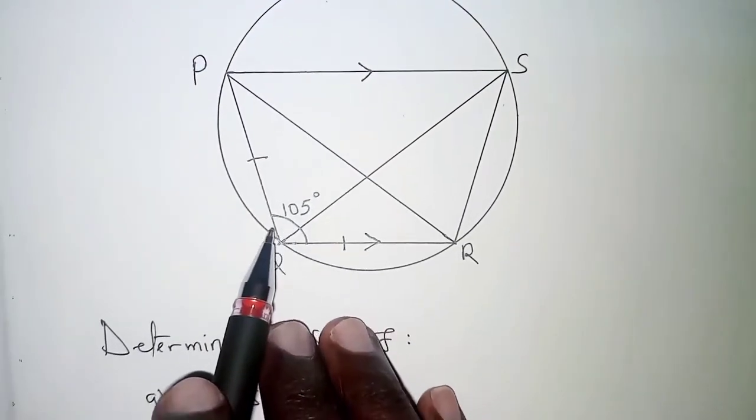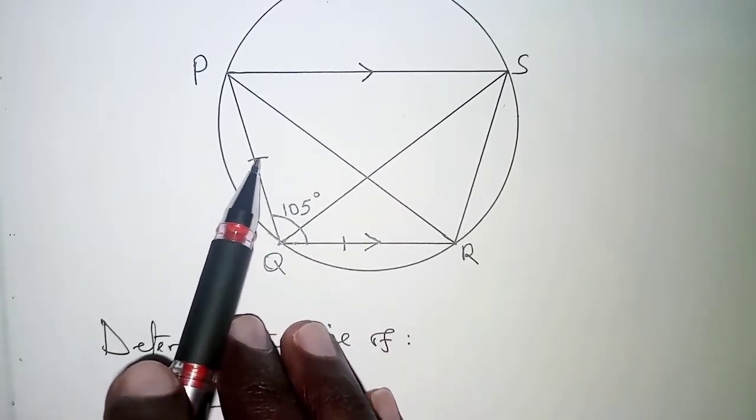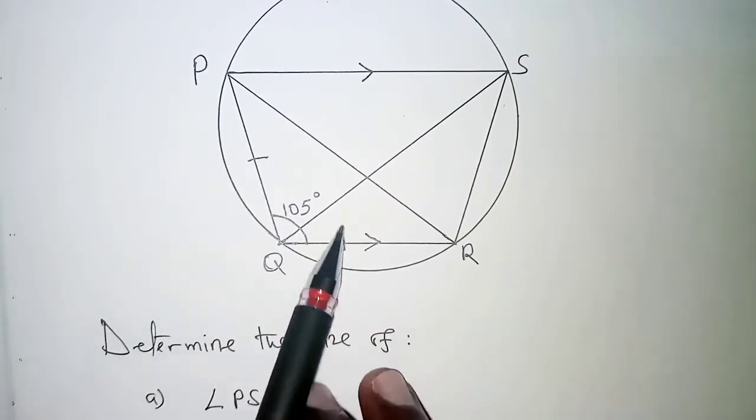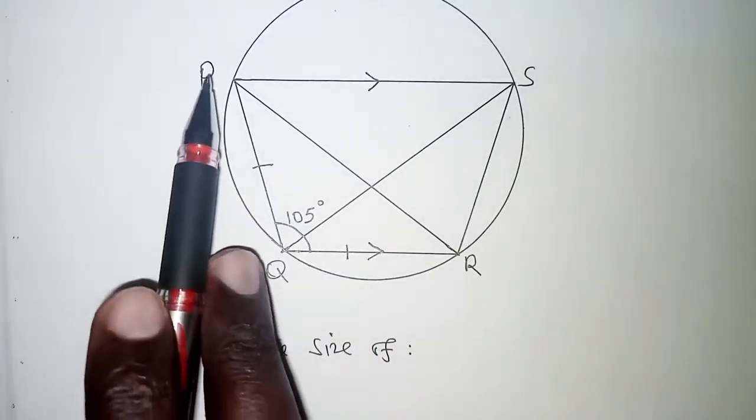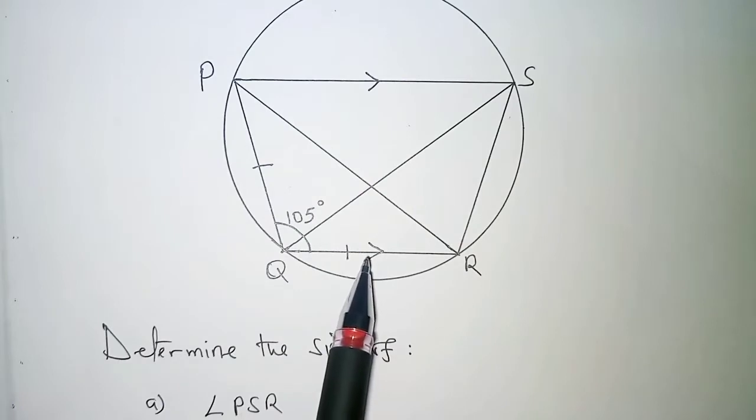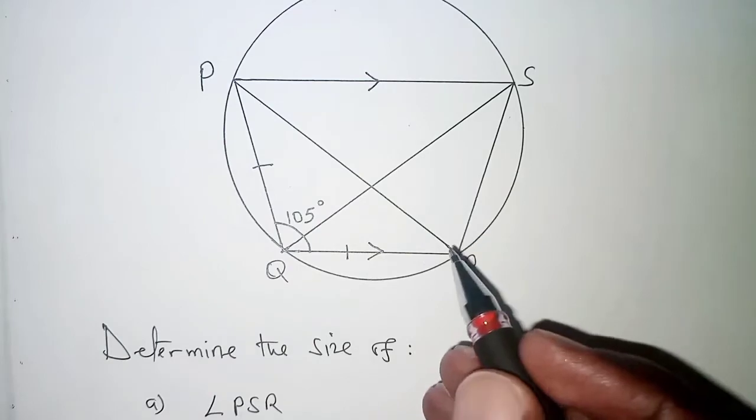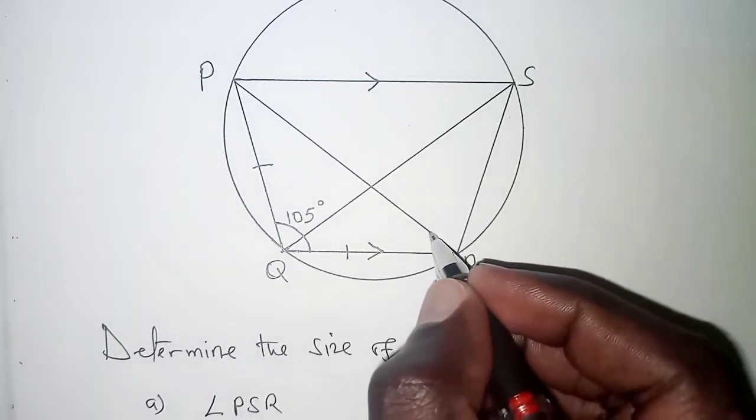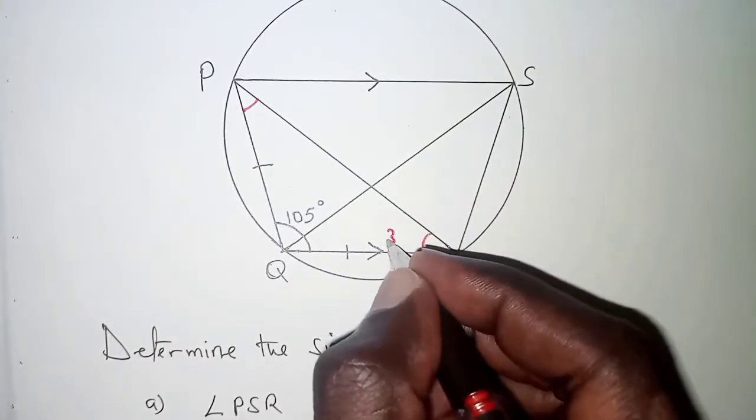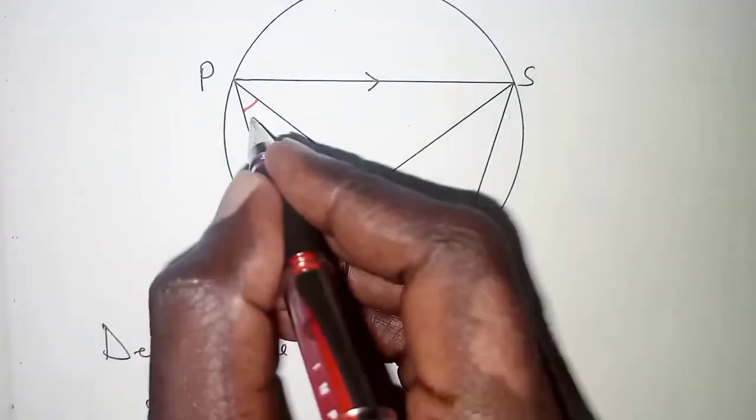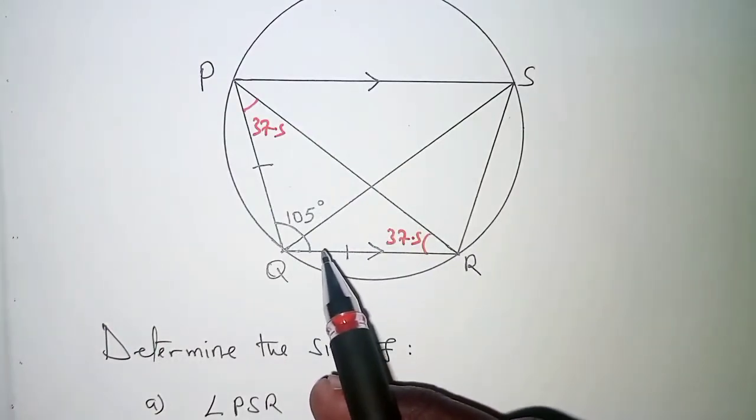Right here we have angle 105 already given and the information here we are told that this side and this side are equal that is PQ and QR. That makes triangle PQR an isosceles triangle. So if at this point we have 105 then the base angles should be 75 divided by 2 that should give us 37.5. Base angles of an isosceles triangle will always be equal.